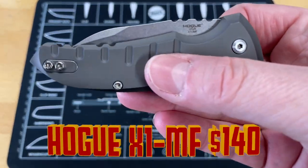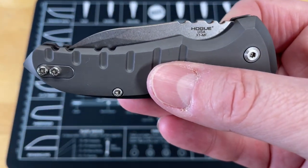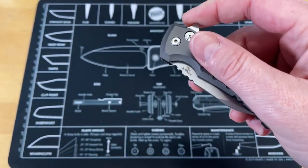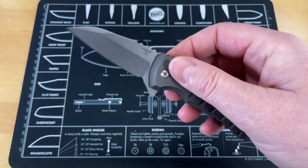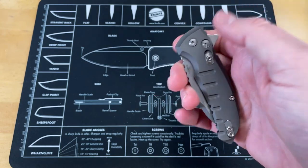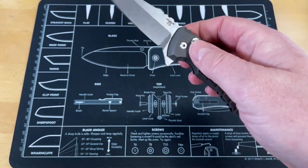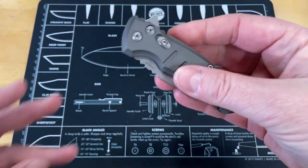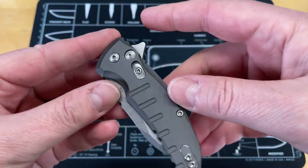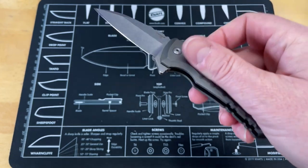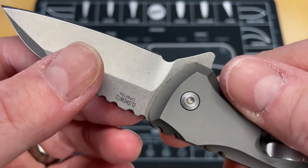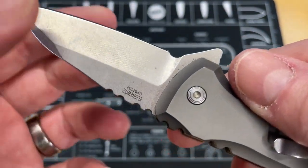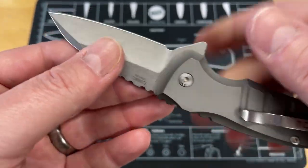The last knife is the X1 Mini or Micro Flip, the X1 MF by Hoag. These are coming in at $140. The reason it's on the list is for two reasons: it has the coolest sounding most fidgety action of any button lock, and there's not a lot of these left and I don't want you guys to miss out. You are looking at an American made Elijah Isler design in CPM 154. This one is wharncliffe.